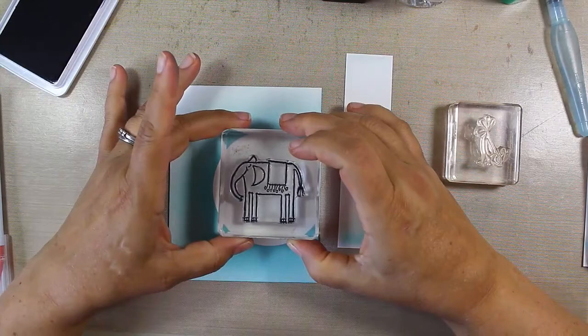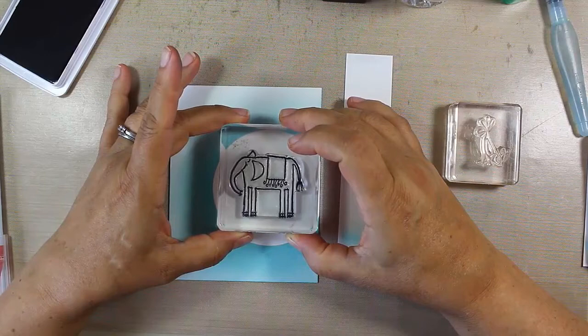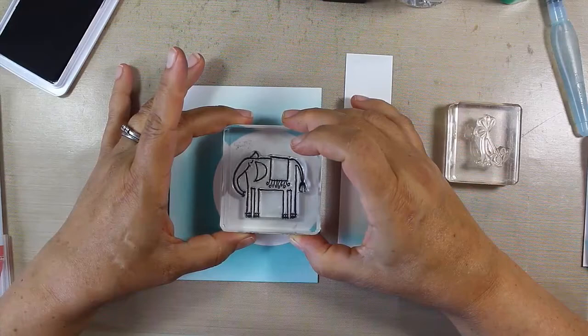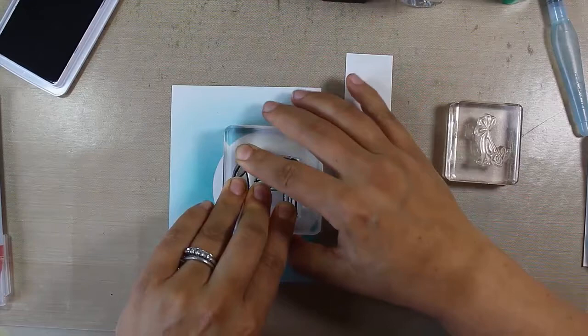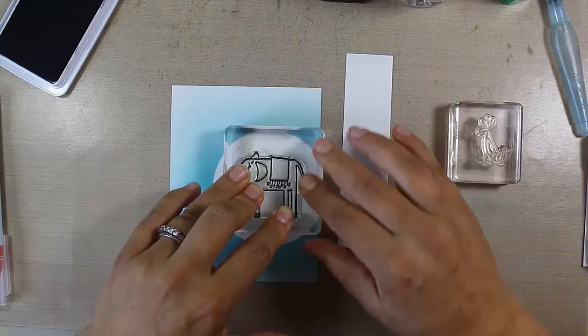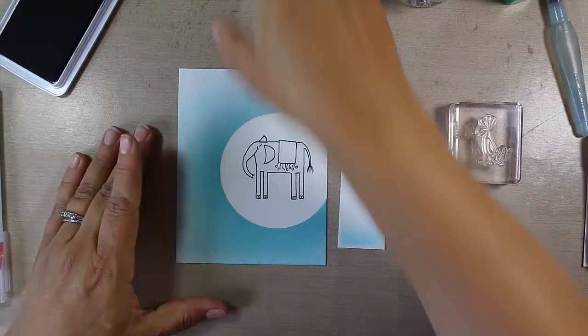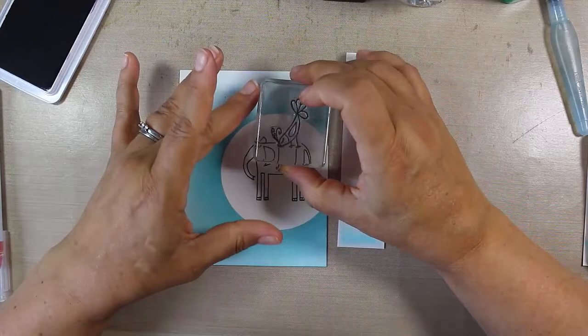I'm taking my elephant here, going to get him inked up rather well. We're going to stamp him here in the center but a little bit more towards the top because I want my greeting to overlap a little bit. I'll give my ink a chance to transfer from the stamp to the watercolor paper.